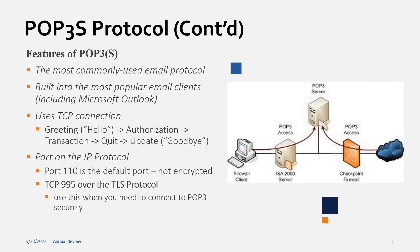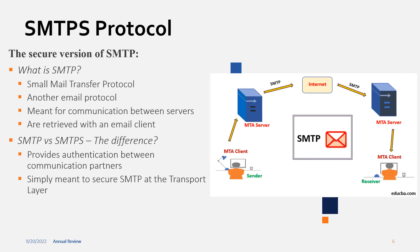How it works: we greet the system, then it's authorized, typically through the three-way handshake. Then there's the transaction where we send and receive emails. After that we make the quit request, and then it enters update mode — also known as the goodbye. By default it's established on port 110, but that means it's not encrypted, so all emails are sent as plain text. By establishing it over TCP port 995, this is where we're able to connect to POP3 securely.